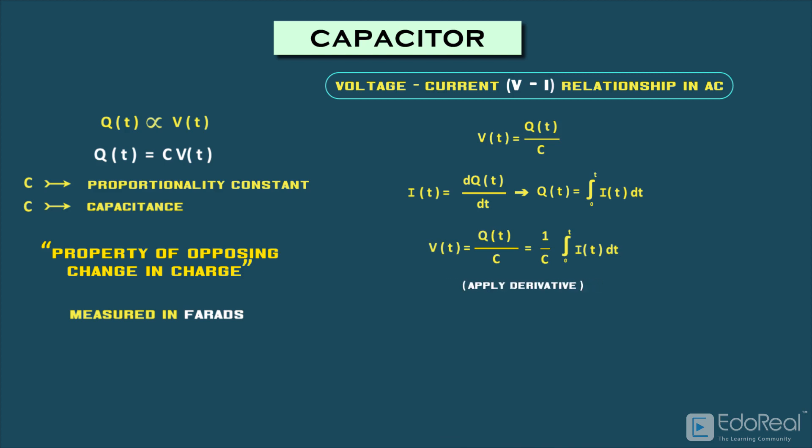Now, apply derivative to this equation on both sides. By this equation, we get the equation for current across the capacitor.